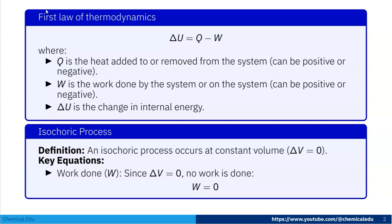First, I'll talk about the first law of thermodynamics. The first law states that delta U is equal to Q minus W, where Q is the heat added to or removed from the system and can be positive or negative. W is the work done by or on the system, and delta U is the change in internal energy.